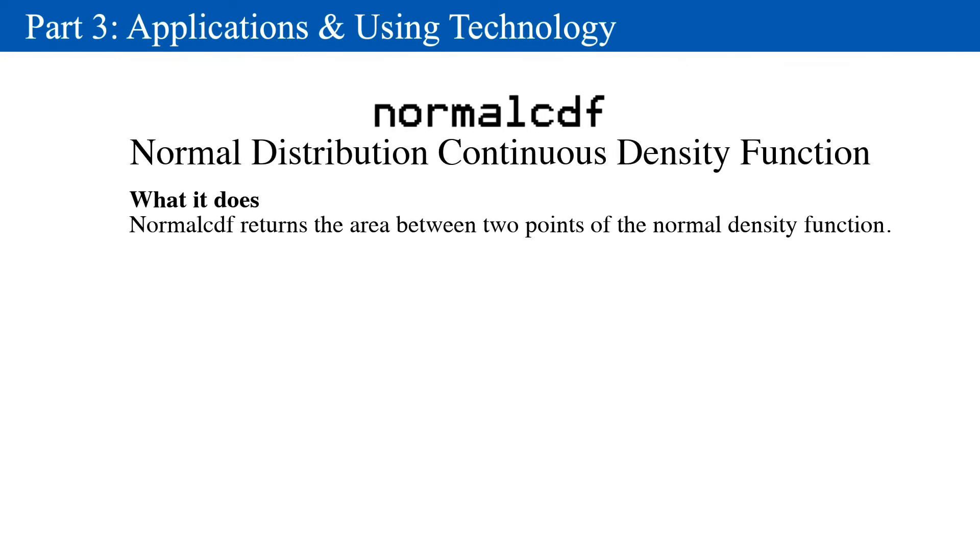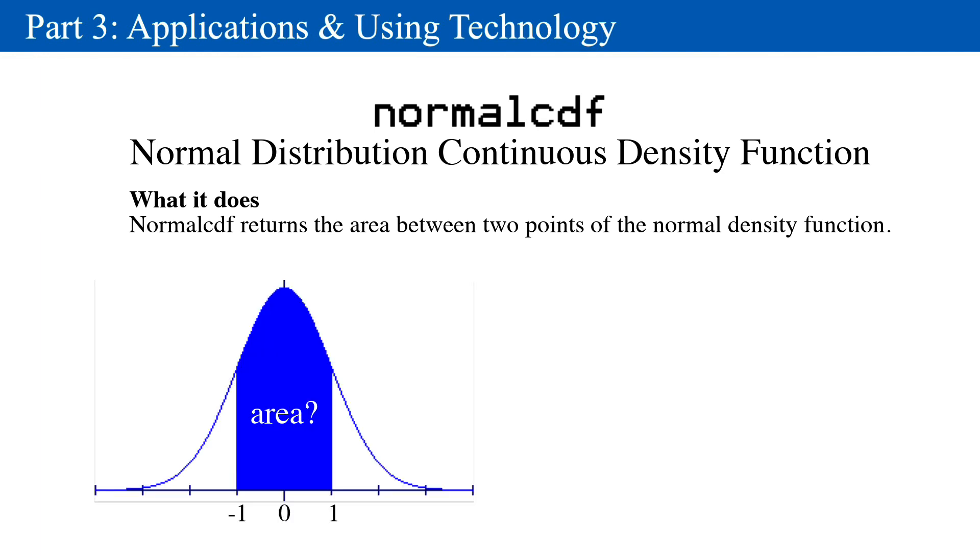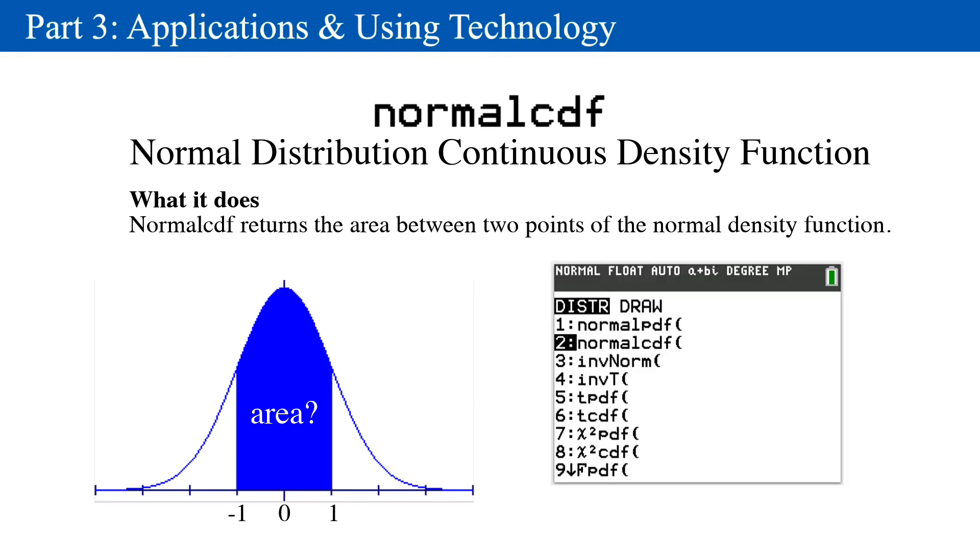NormalCDF, which means Normal Distribution Continuous Density Function, will give you the area under the normal curve when given two points. For example, the area between negative 1 and positive 1 is entered like so. The TI-84 gives you a prompt for four parameters. In this example, we will assume a mean of 0 and a standard deviation of 1.